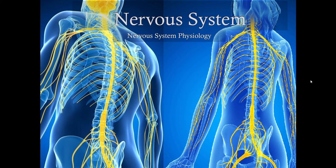Welcome students to a little lecture on the functioning of the nervous system. There's a previous lecture that looked at the basic anatomy of the nervous system. Now we're going to talk about how the nervous system functions, which really means we're going to be talking about action potentials.